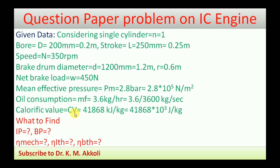Calorific value CV = 41868 kJ/kg = 41868 × 10³ J/kg. Using these data we need to find: indicated power (IP), brake power (BP), mechanical efficiency (η_mec), indicated thermal efficiency (η_ITH), and brake thermal efficiency (η_BTH).